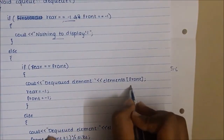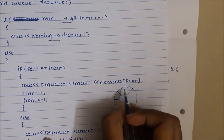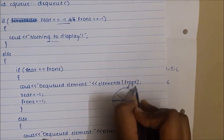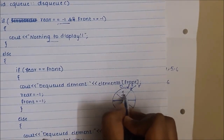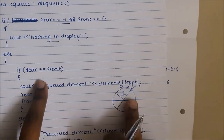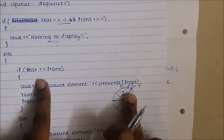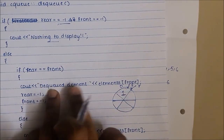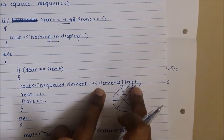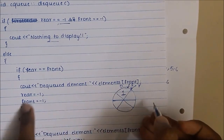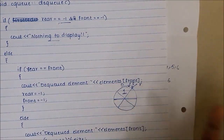If there is a single element, for example in a queue of size 6 where front and rear both point to index 0 and the element is 1 — front equals rear equals 0, so the single-element condition is satisfied. It prints the dequeued element: elements[front], which is elements[0] = 1. Then front and rear are set to minus 1, indicating the queue becomes empty after the dequeue.